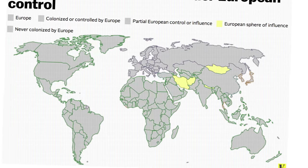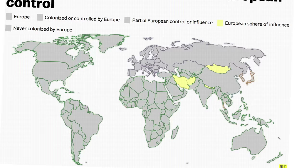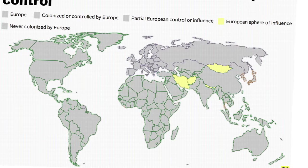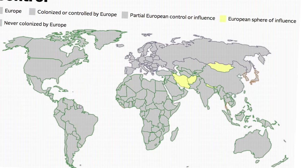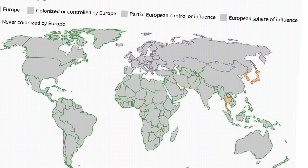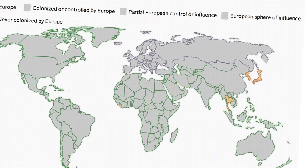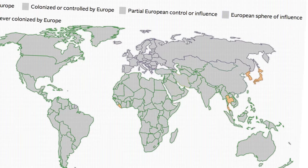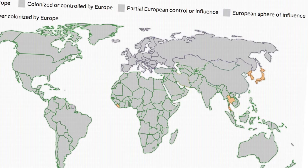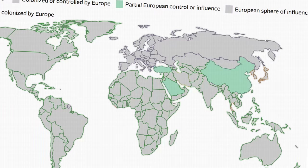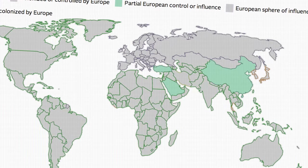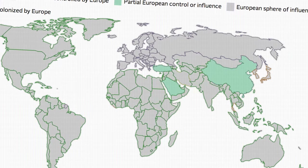Those which were in a European sphere of influence while maintaining their sovereignty were Persia, Afghanistan, Nepal, Bhutan, and Mongolia. Those which were never colonized by Europe: only Liberia, Siam or Thailand, Korea, and Japan. And those which were under partial European control or influence — according to this map, only three: Turkey, Saudi Arabia, and China.